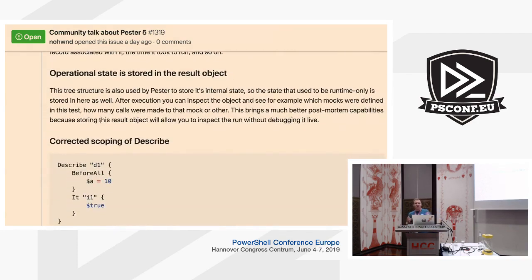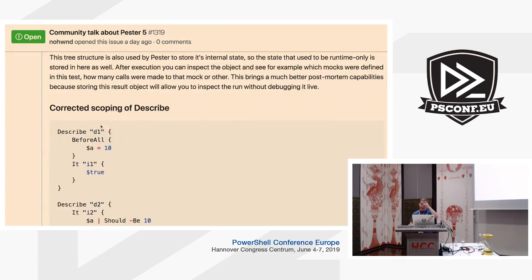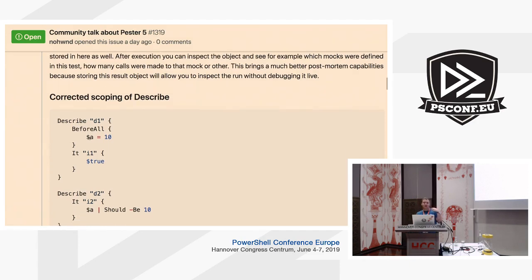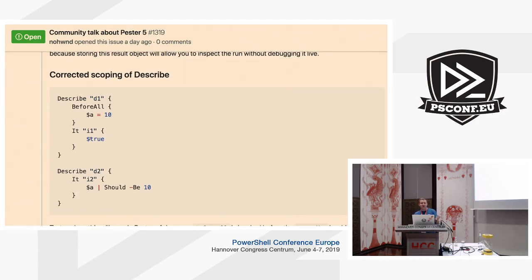Then there's operational state stored as a result in the object. When you get the whole tree back, you get logs — things like 'this mock should be applied here, why didn't it pass?' You can look later and realize you put the string on the wrong side of the EQ operator. Also we've been working on an AST thing where we can take the filter apart, annotate it, and show you which part passed and which part didn't — so you don't get destructive logging onto the screen.